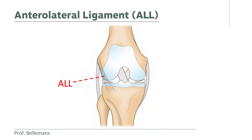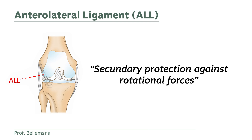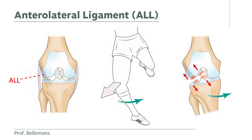The anterolateral ligament is the back-up ligament of the ACL. It provides secondary protection against rotational forces, and therefore helps the ACL in controlling vigorous rotation or pivoting.